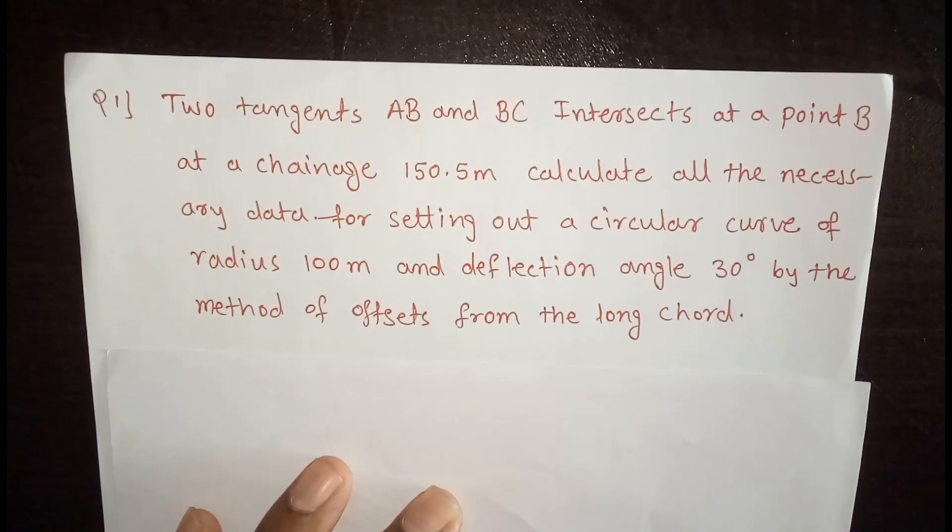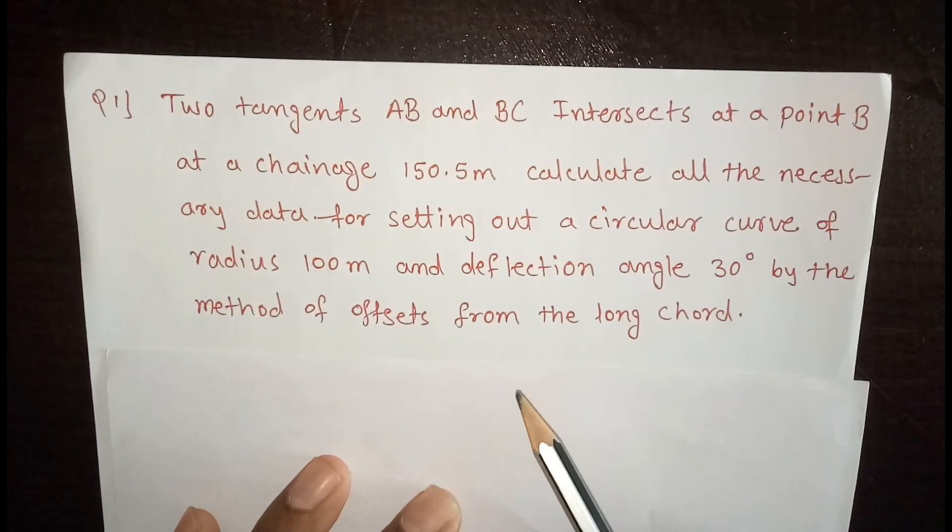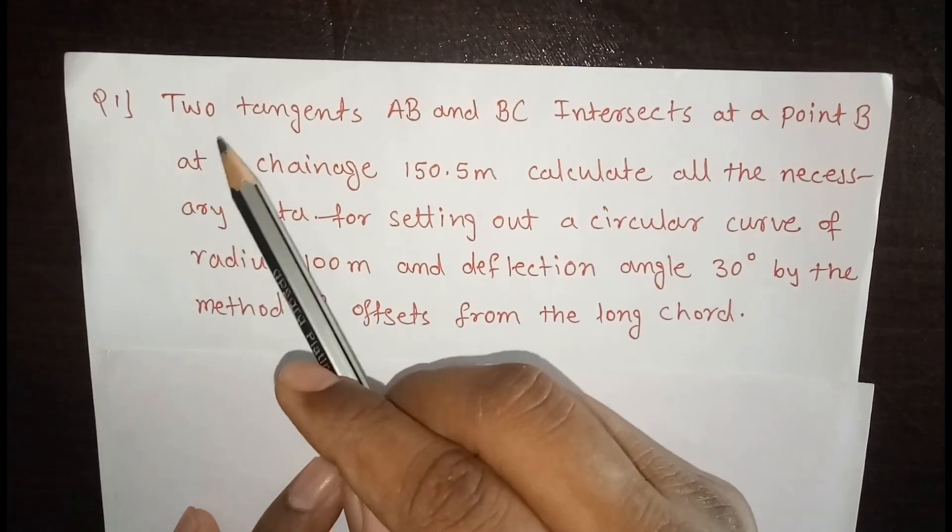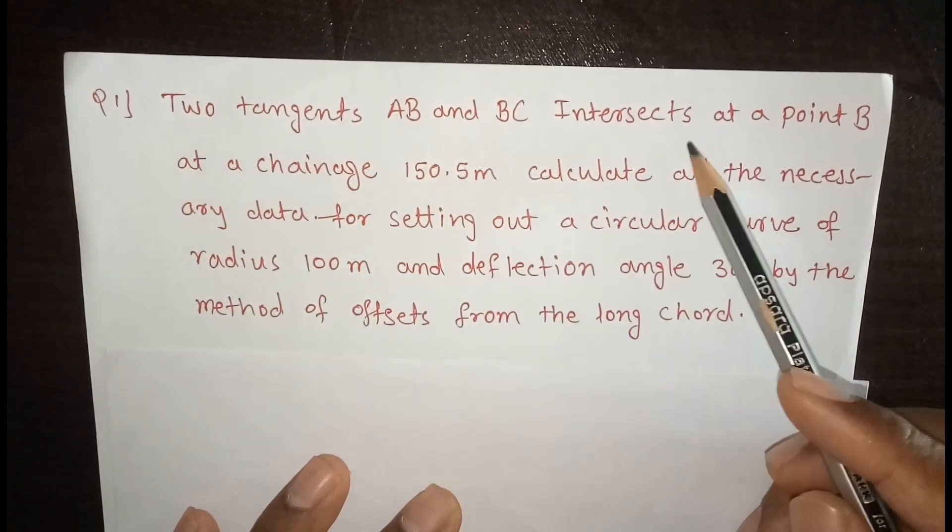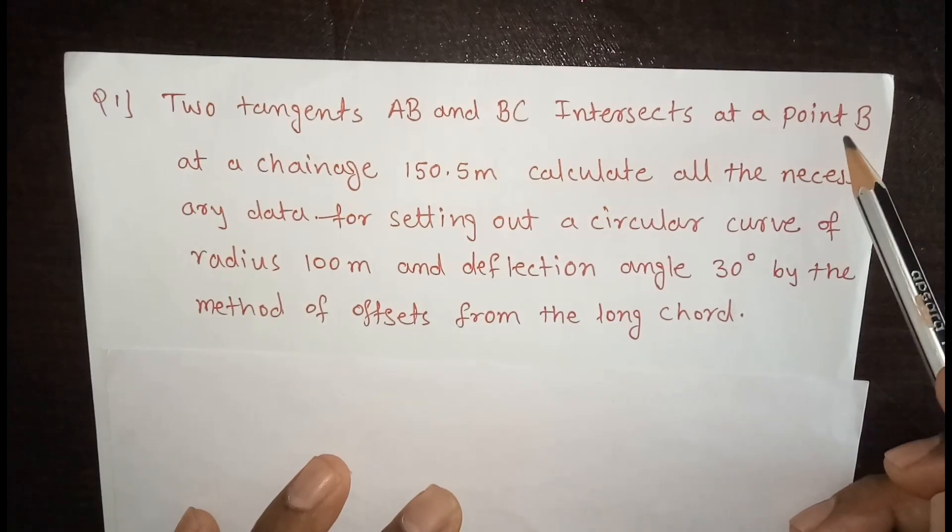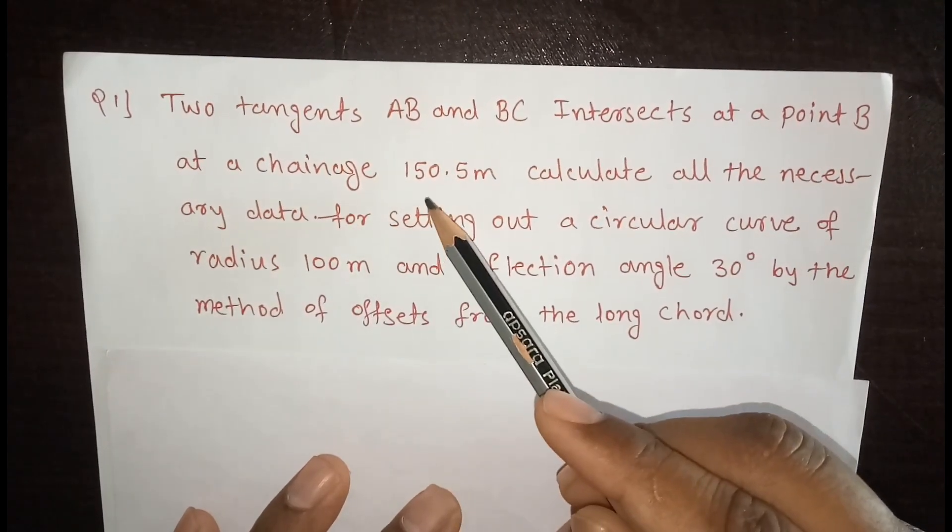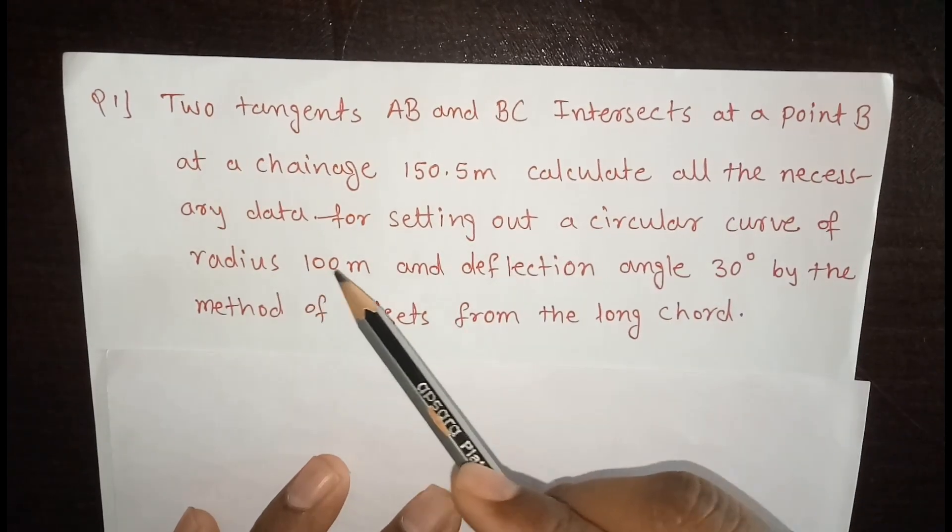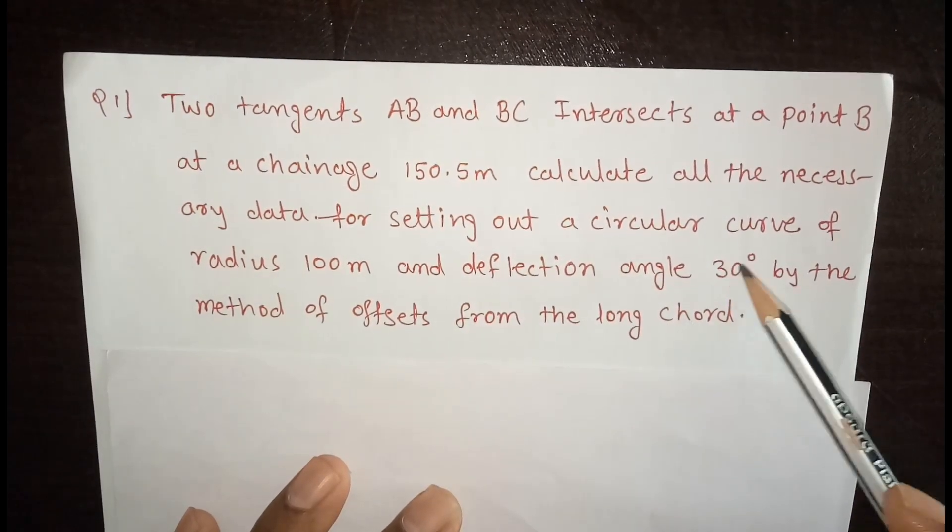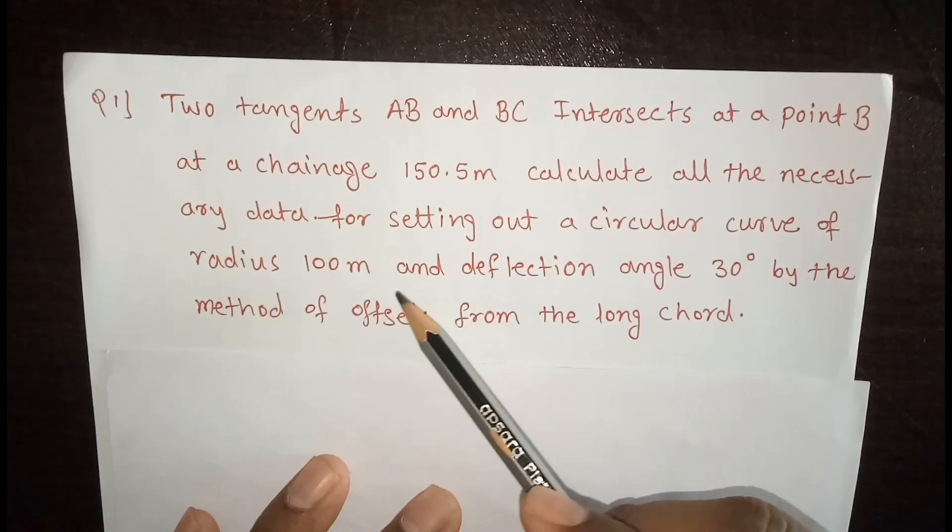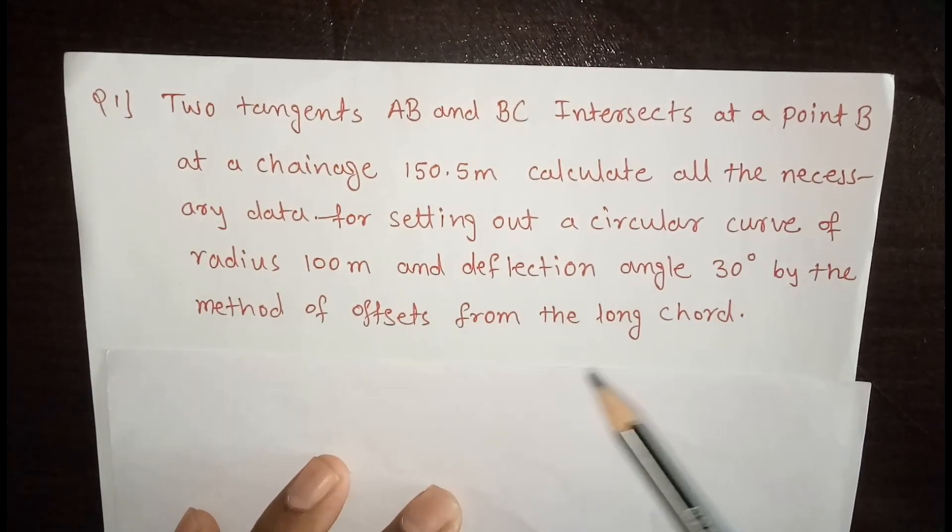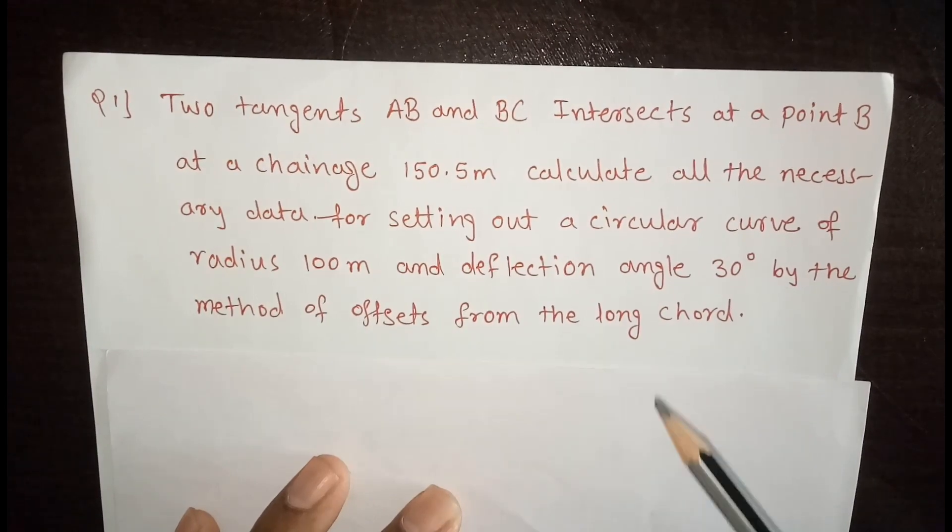Hello friends, today we will see numerical on offset from long chord method. Two tangent AB and BC intersect at a point B at a chainage 150.5 meter. Calculate all the necessary data for setting out a circular curve of radius 100 meter and deflection angle 30 degree by the method of offset from long chord.